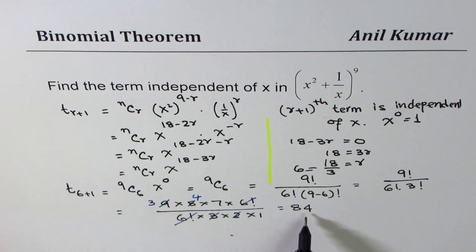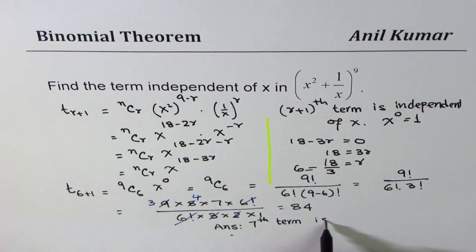So, the term which is independent of x is 84 and that is the 7th term. So, our answer is 7th term is 84.